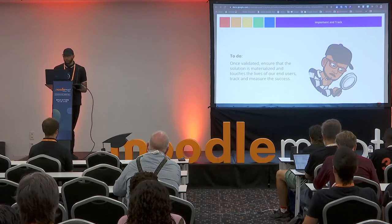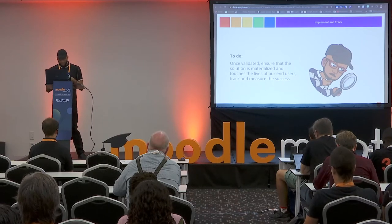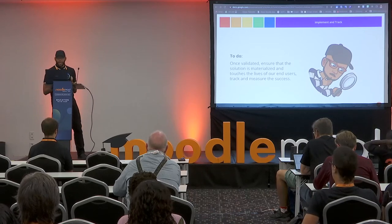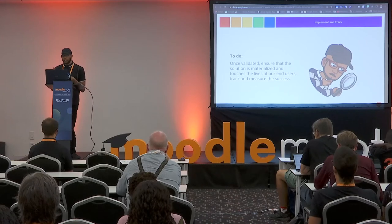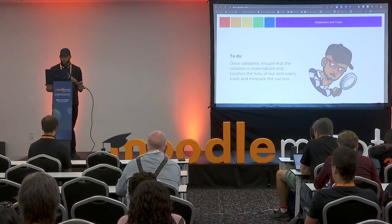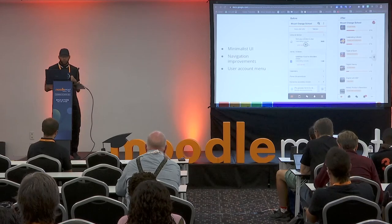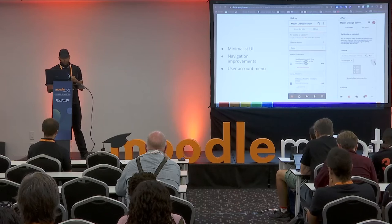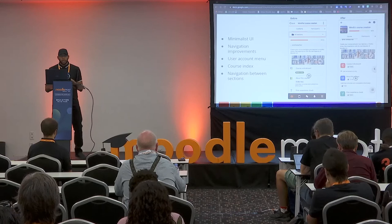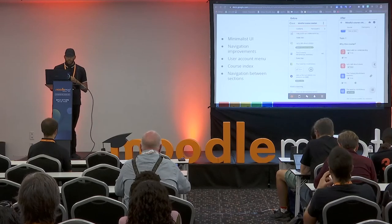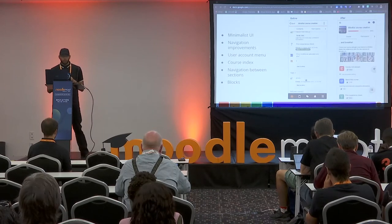After the design thinking process — which is usually cyclical and also iterative — it's important to take into account the phase of implementing and tracking, to check if the solution works and collect learnings. Some of the most noticeable changes implemented include a more minimalist UI, navigation improvements, the user account menu, the new course index, improvements in navigation between sections, and the new blocks drawer.